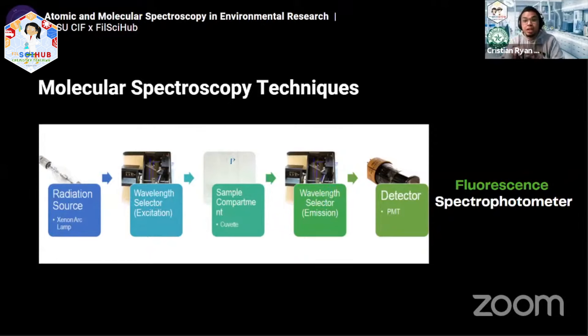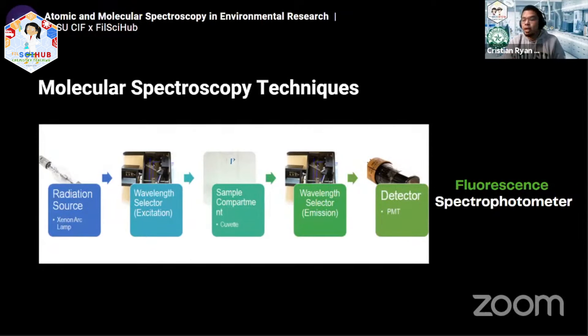Basically, it has two wavelength selectors — one for the excitation and one for the emission of light.